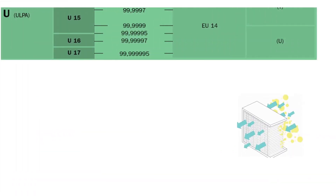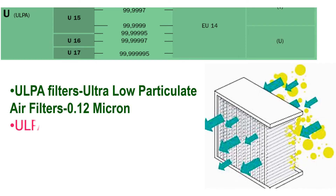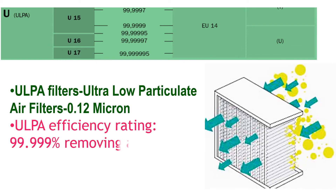ULPA filters — Ultra Low Penetration Air filters — are closely related to HEPA filters but even more efficient. ULPA filters are specified to remove 99.999% of contaminants, capturing contaminants of size 0.12 microns or larger in diameter.